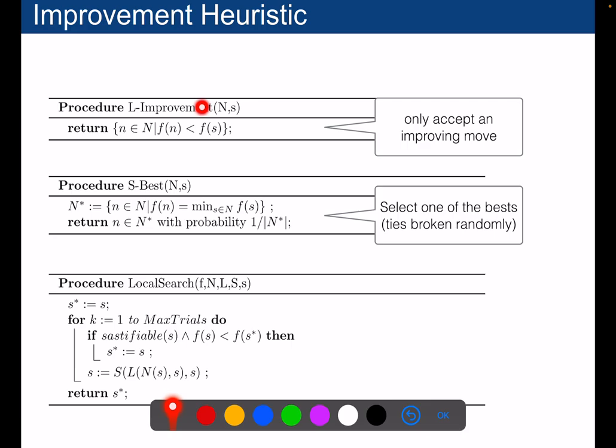And then select best, we will select one of the best neighborhoods in L with a probability that is 1 over the number of bests. So this N star will be the set of all the neighborhoods that are at least as good as the best solution in N, and you will select one of them with this probability. You will flip a die and select one of them randomly.